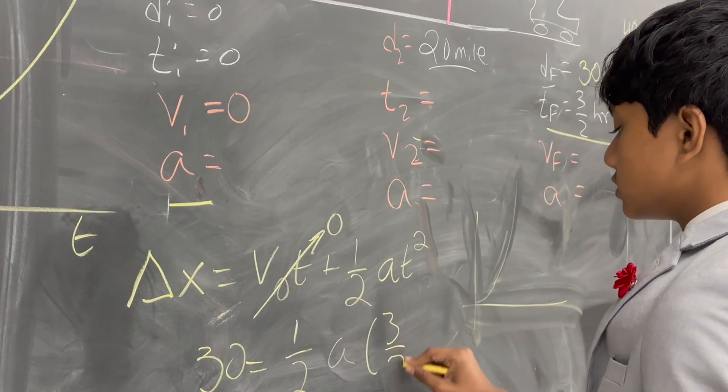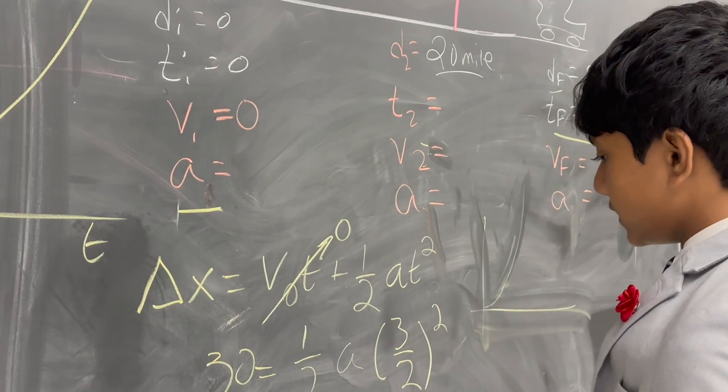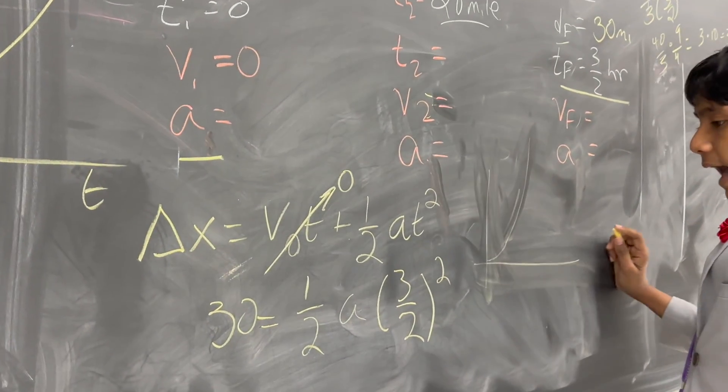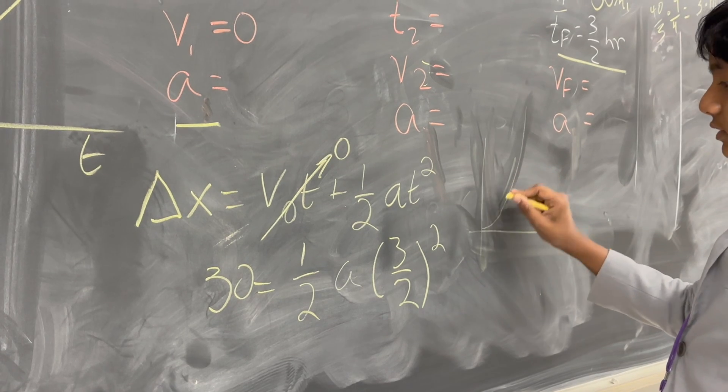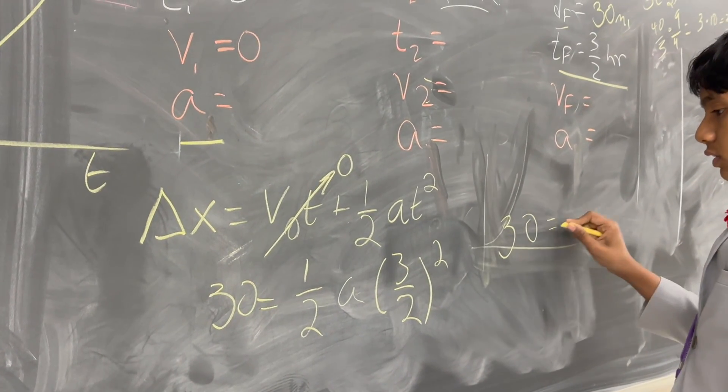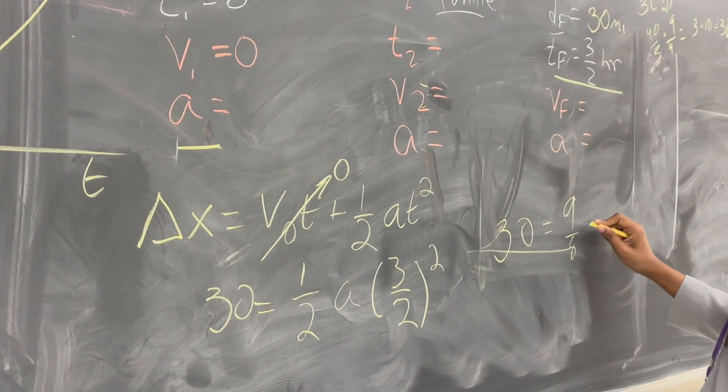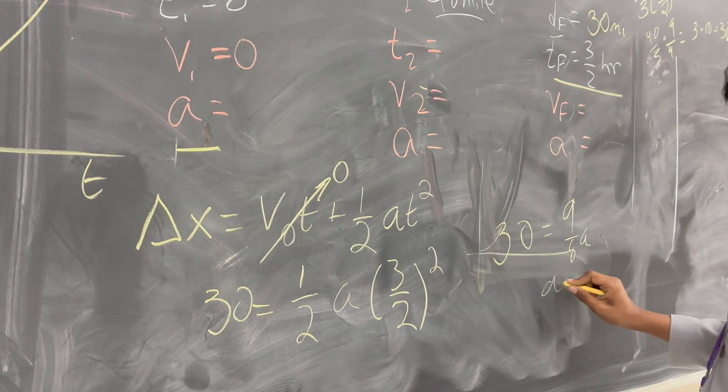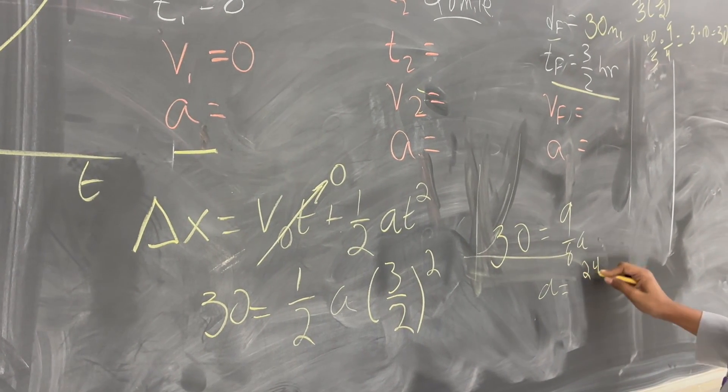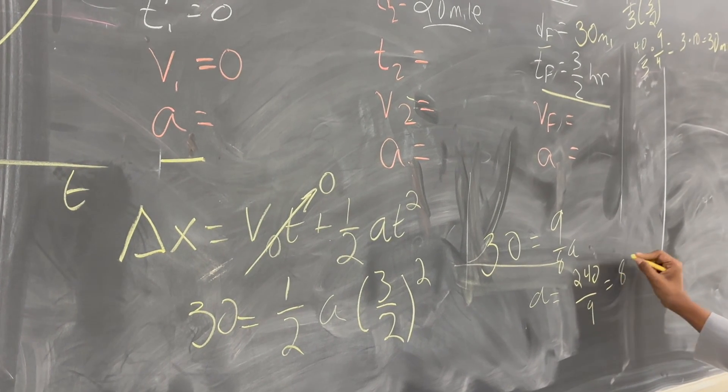So, we have that 30 is equal to half A T squared. Well, what's the time? 3 halves. So now, we've got acceleration too. Absolutely wonderful so far. So, that means we get 30 is equal to 9 over 8, A. Or, in other words, A is equal to 240 over 9, which reduces to 80 over 3.